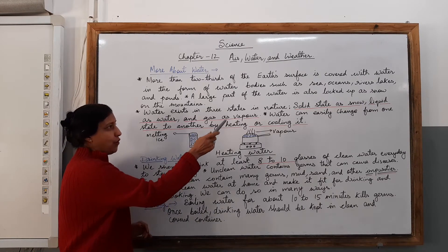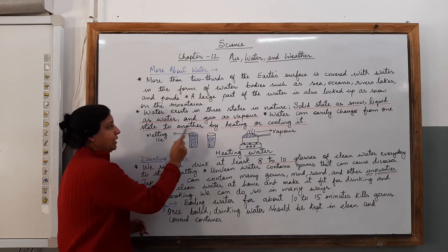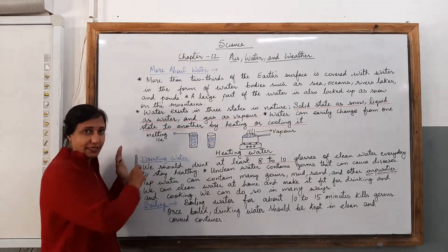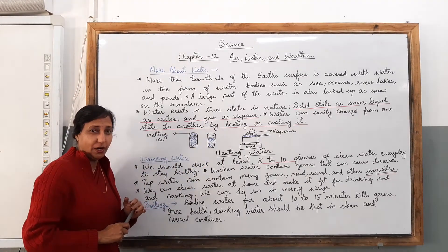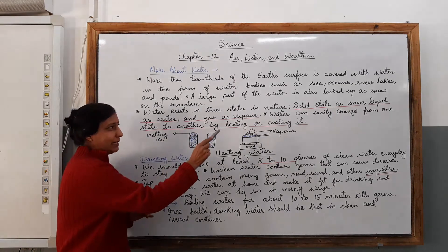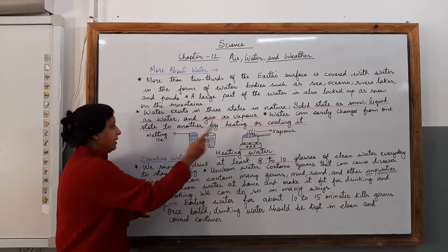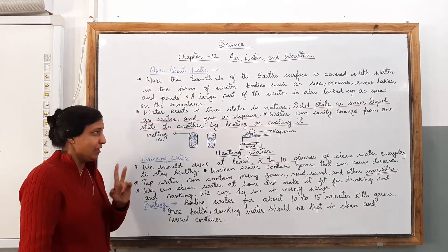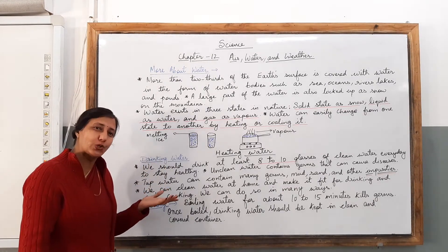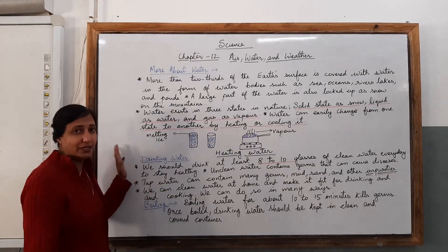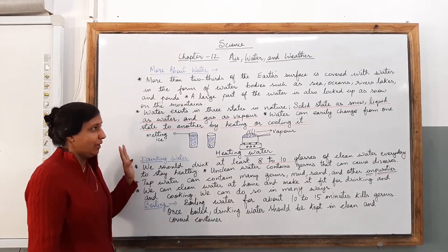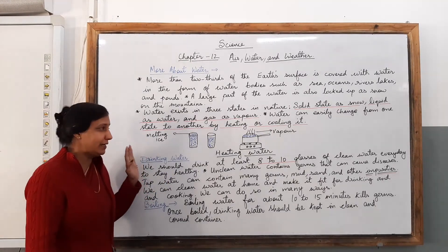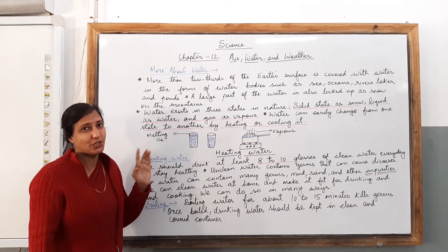Water can easily change from one state to another by heating or cooling it. By this experiment you have understood that there are two processes: heating and cooling. I hope you have understood the three states of water. With solid, it can be ice; when it is liquid, it is water; and when it is gas, it is vapour.